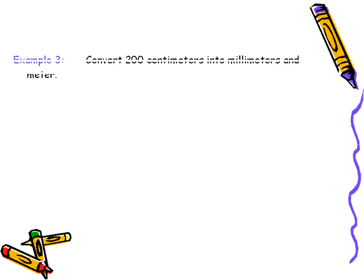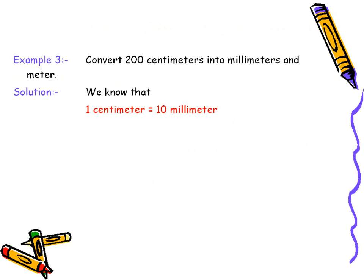Let's try to convert two hundred centimeters to millimeters. We know that one centimeter is equal to ten millimeters. So two hundred centimeters should be equal to two hundred times ten millimeters, which would give two thousand millimeters as the answer.